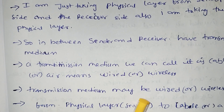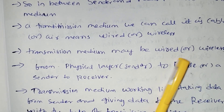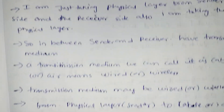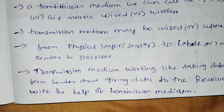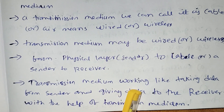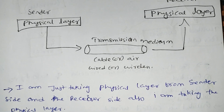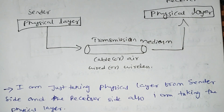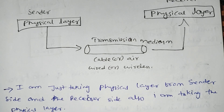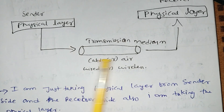Transmission medium may be wired or wireless, from the physical layer sender to receiver. All the data is transferred to the receiver via cable. The transmission medium works by taking data from the sender and giving it to the receiver. The transmission medium takes data from the sender and sends it to the receiver, who receives the data through the wire connection.